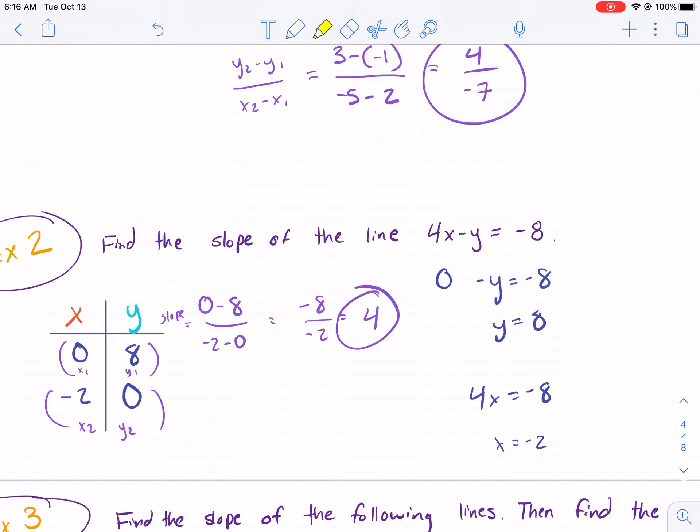Now, some of you might recognize that this is almost in slope-intercept form, which we're going to talk about later. But let's just say you're familiar with this already. I would add Y to both sides. You get 4X equals negative 8 plus Y. Then I would add 8 to both sides. So, add 8 and we get 4X plus 8 equals Y. And you can see that our slope, that number 4, is verified.